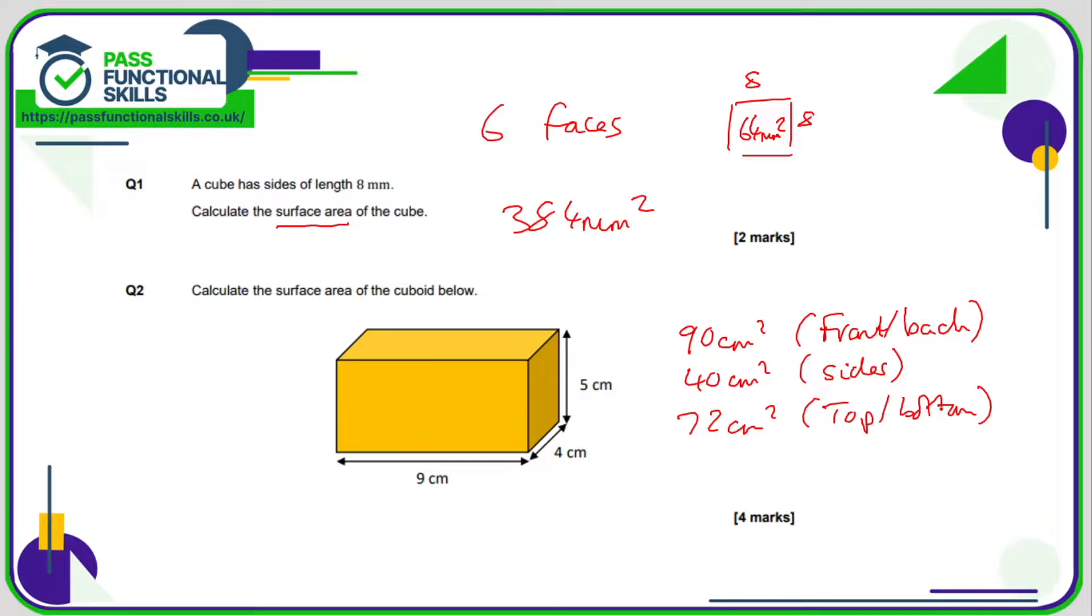So now all we need to do is just add 72, 40 and 90 and we get a grand total of 202 square centimeters, and that is the surface area of that cuboid.